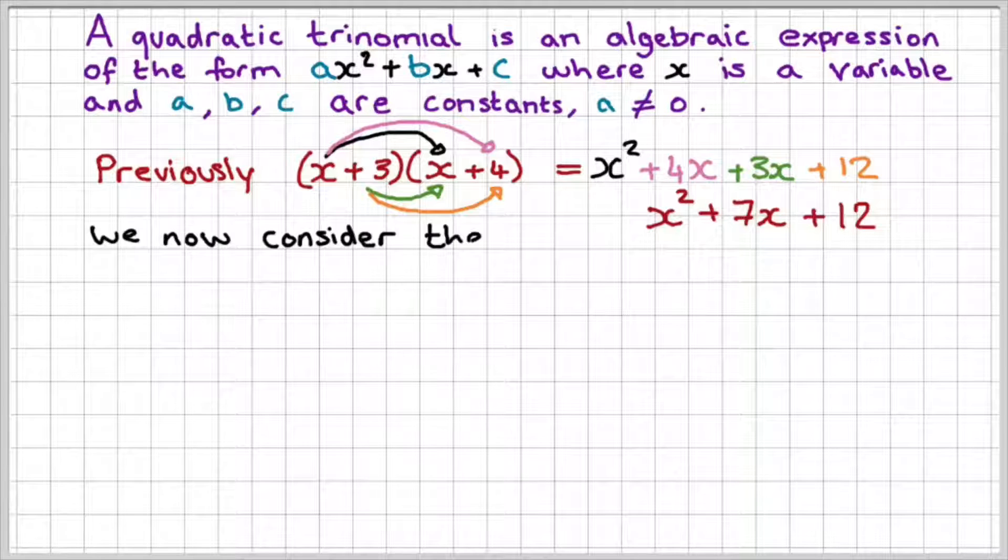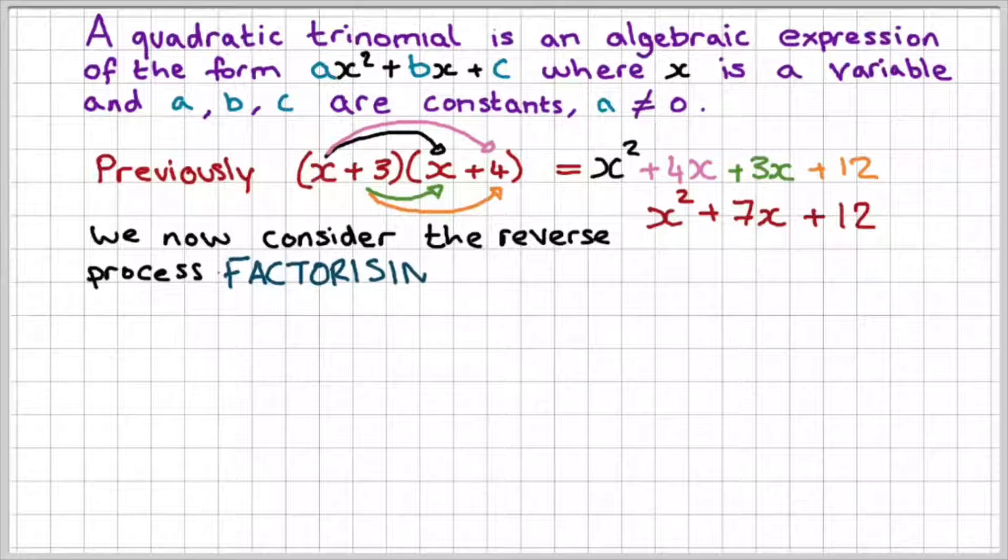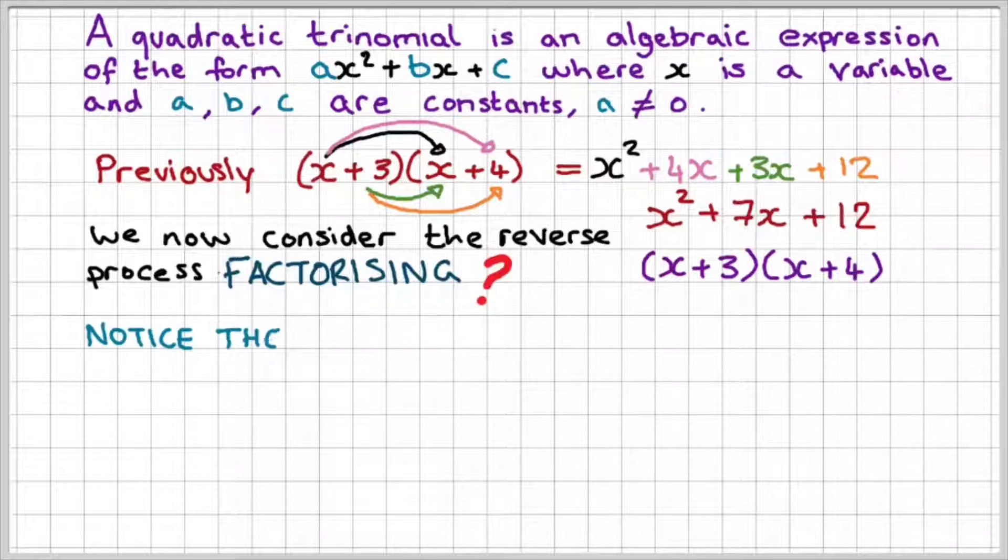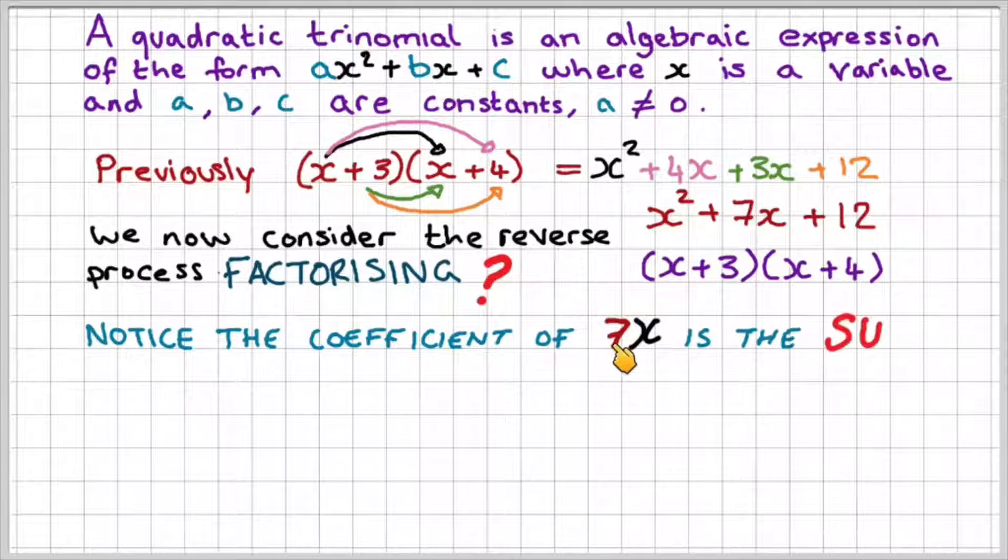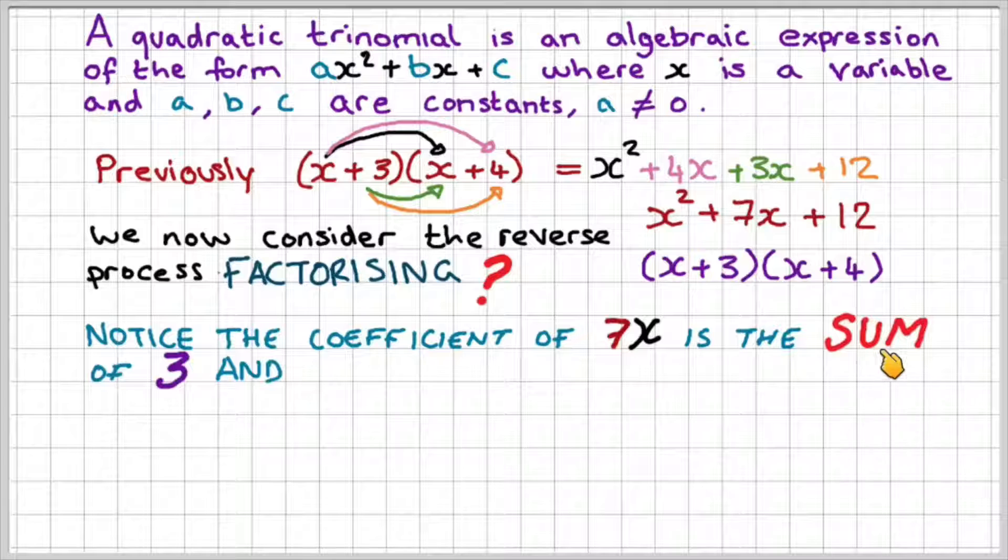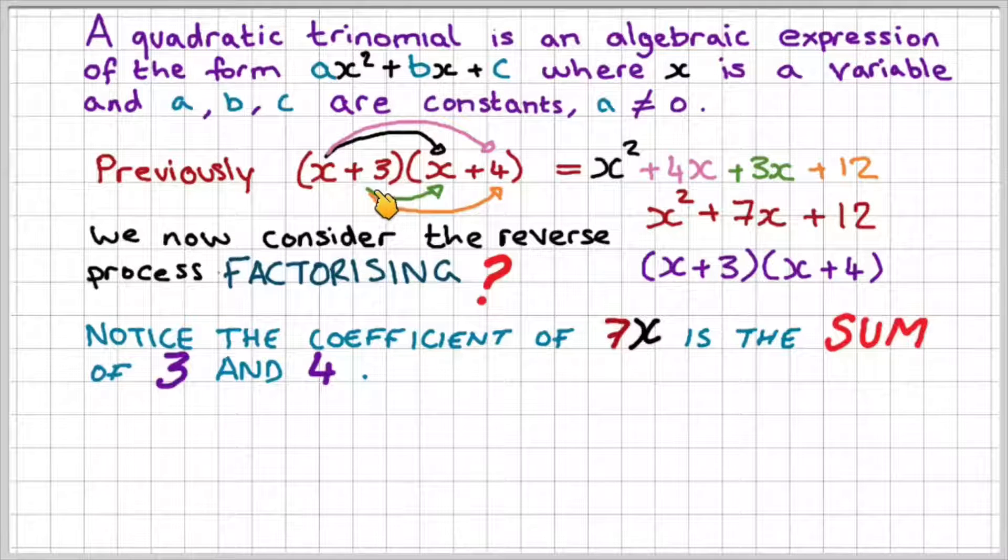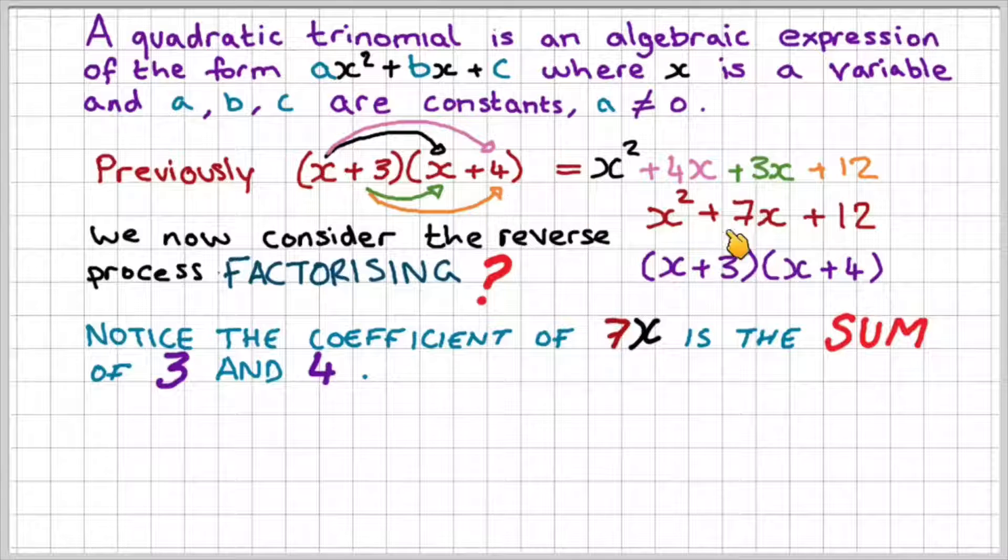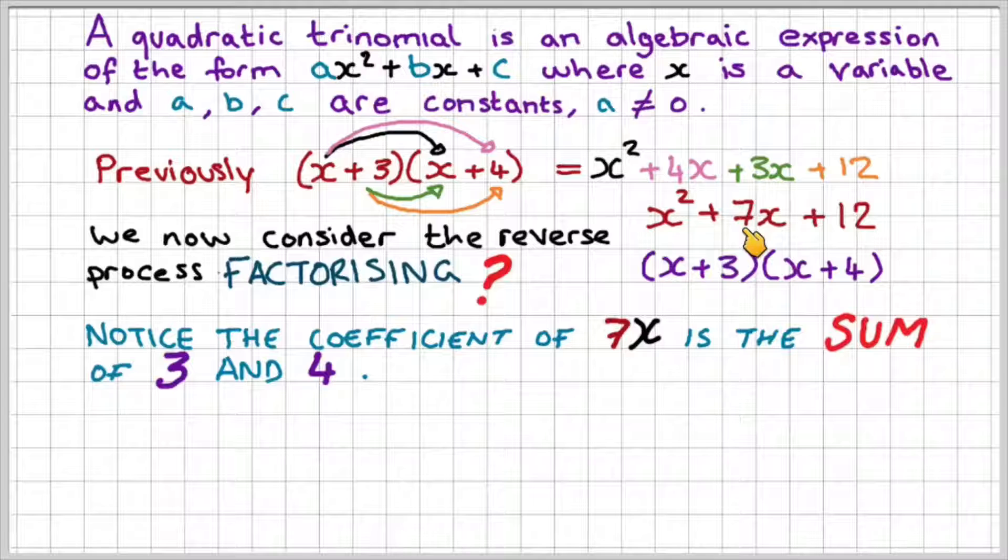Now what we need to do is consider the reverse process, which is called factorising. I want you to notice that the coefficient of x, which is 7, is the sum of 3 and 4.